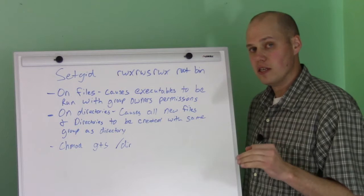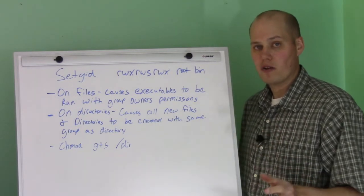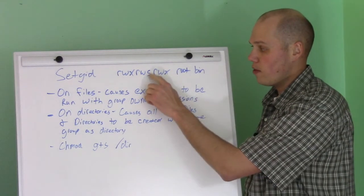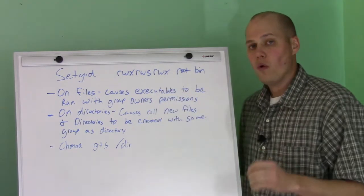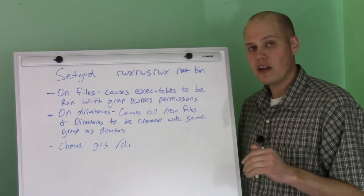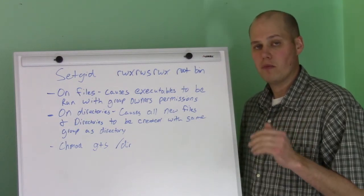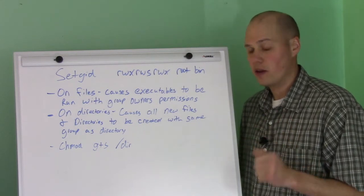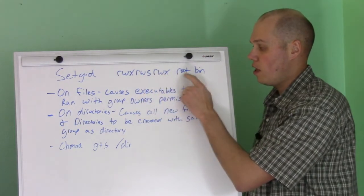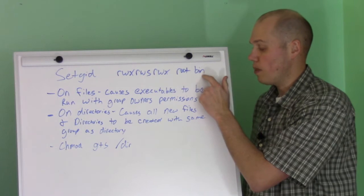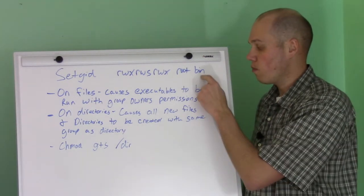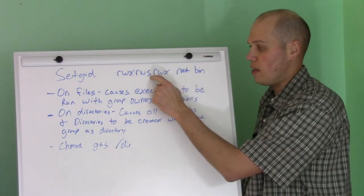What the set GID bit means depends on whether it's set on a file or a directory — we'll start with files. If you have the set GID bit set on an executable file, when you execute it, it'll take on the group owner's permissions when the file is executed. For example, if a file has the set GID bit set and the owner is root and the group is bin, when you execute it, it's going to run with the group permissions of bin.